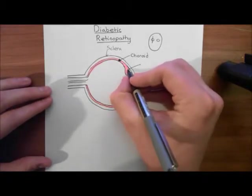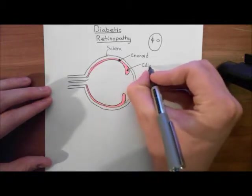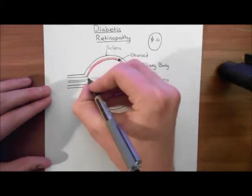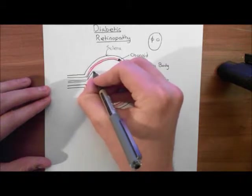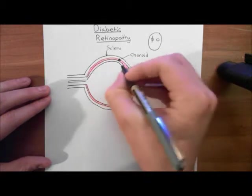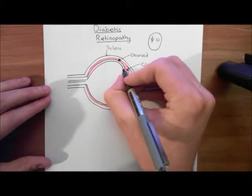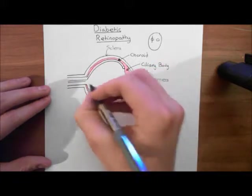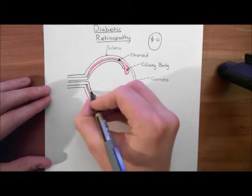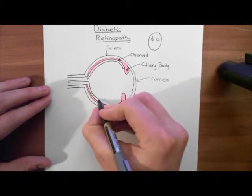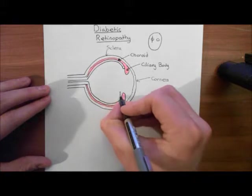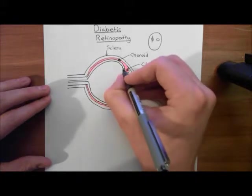And this portion up here, this is the ciliary body or the ciliaris muscle. So the final layer then is the retina, and this is continuous with the nervous tissue of the optic nerve down there. So here comes the retina, and then after the retina is finished, what you'll have is the suspensory ligaments, which will hold the lens in position.